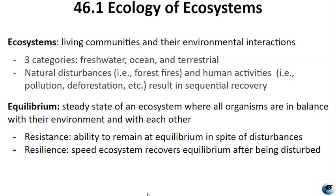Ecosystems face disruptions from both nature and from human activities. These disruptions often throw entire ecosystems off balance. We measure this balance, or equilibrium, using terms like resistance — which is how well an ecosystem can handle a disruption — and resilience, which is how fast an ecosystem can bounce back after a disruption. Sometimes when humans mess things up too much, an ecosystem can really suffer and may be changed so much that it just can't get back to how it was before.